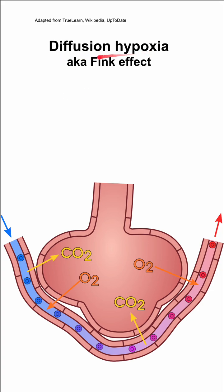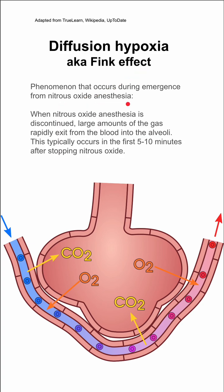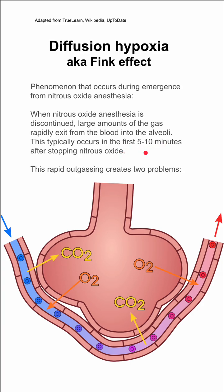Here are some notes on diffusion hypoxia, also called the Fink effect. This is a phenomenon that occurs during emergence from nitrous oxide anesthesia. When nitrous oxide anesthesia is discontinued, large amounts of gas come out of the bloodstream into the alveoli. Nitrous oxide is one of the shorter-acting gas anesthetics, so a large amount comes out very quickly, rapidly exiting the blood into the alveoli. This typically occurs in the first five to ten minutes after stopping nitrous oxide.